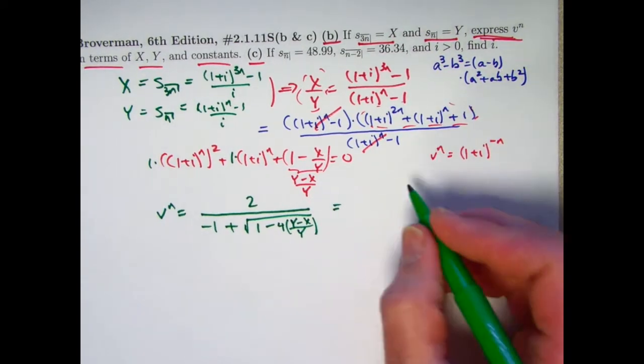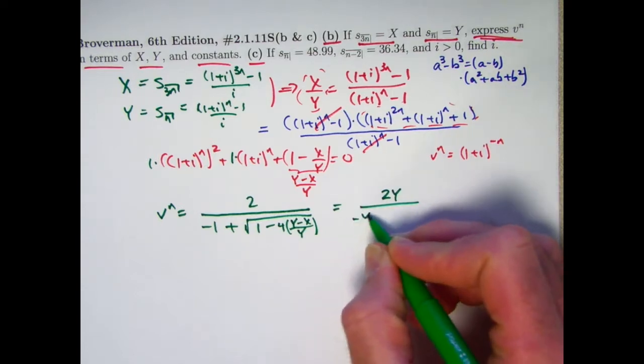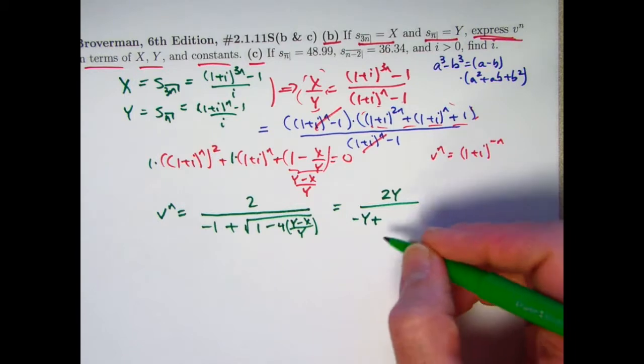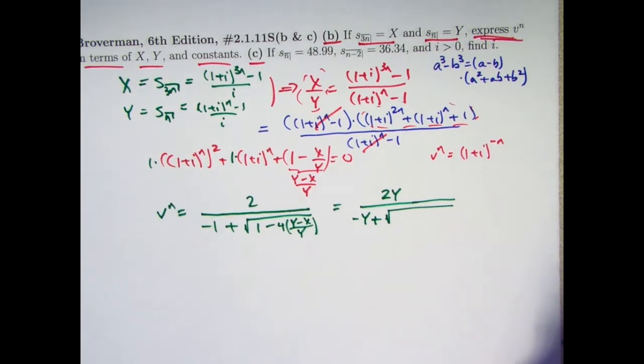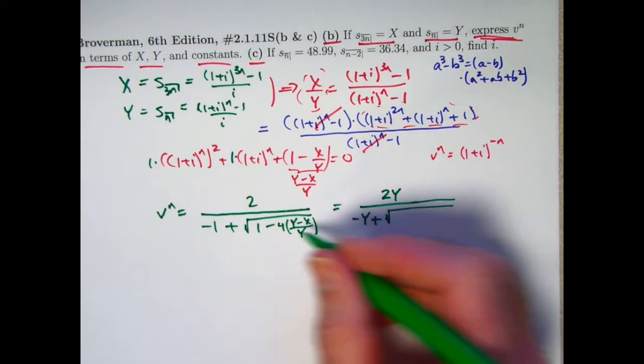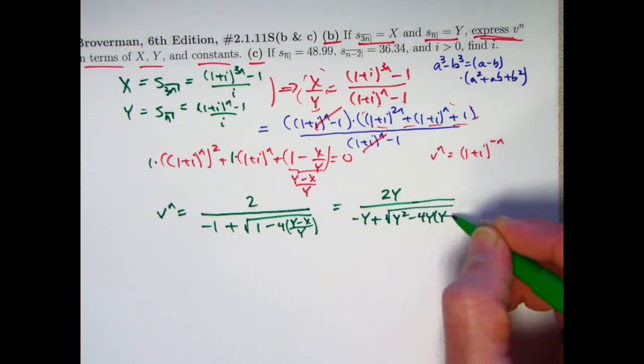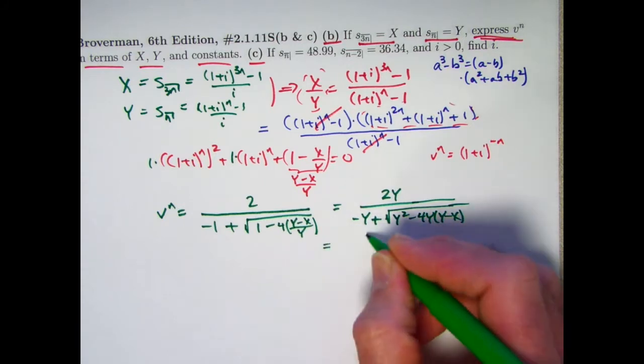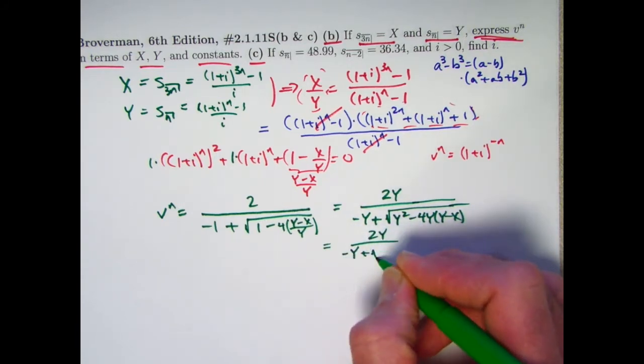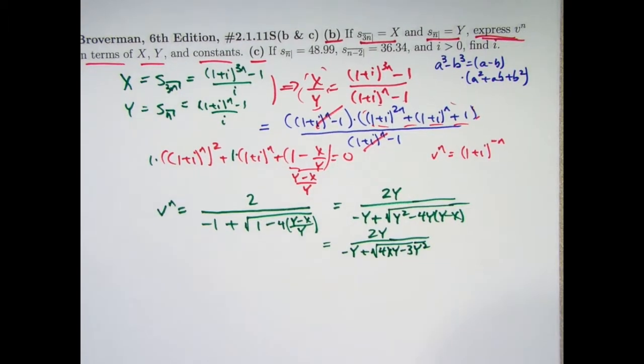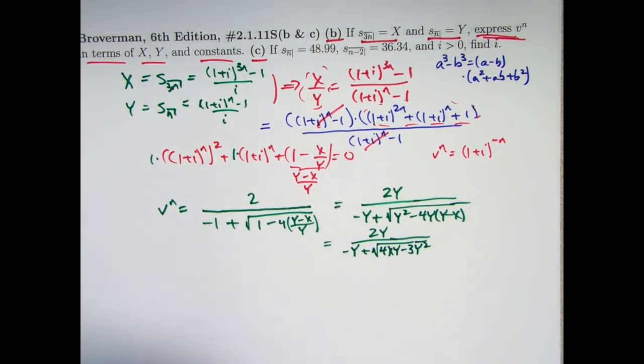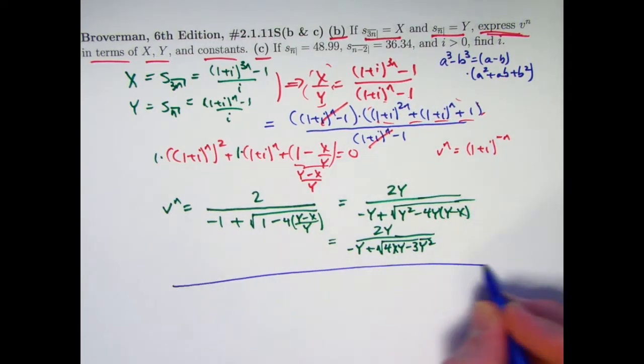You could write it in different forms. You could, for example, multiply the top and the bottom by y. On a multiple choice exam, it's not clear which form the answer is going to be in. So you should be flexible enough to write this in different ways. Y, at least if y is positive, would be the square root of y squared. And so I can bring a y squared under here. Get a y squared here. One of the y's cancels here. Looks like it's going to be 4xy minus 3y squared. So again, all these answers are correct. Let me show you next, before I solve part c, that we could have done part a in a different way with a timeline. And in fact, the timeline approach is what we're going to use for part c.